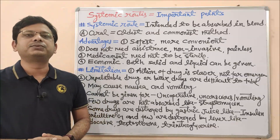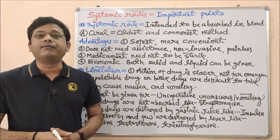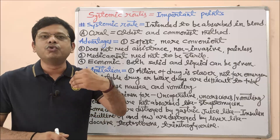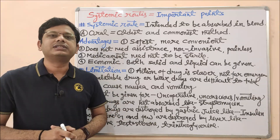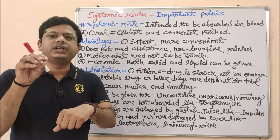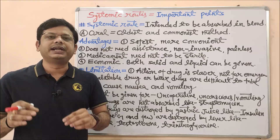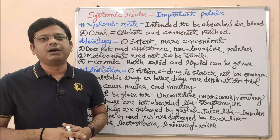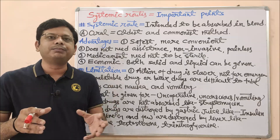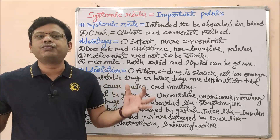We will go one by one through different examples of the systemic route of drug administration. First of all, we should know the meaning of systemic route of drug administration. Any drug which is intended to be absorbed into the blood so that it may move across the body is called the systemic route. Unlike the local route, where the effect is seen only in a restricted part, in systemic drug absorption the drug completely absorbs into the blood and moves all over the body.